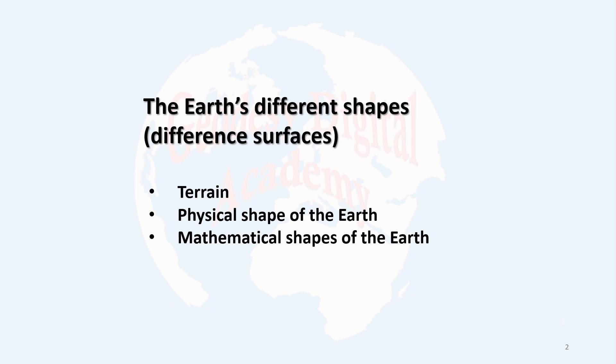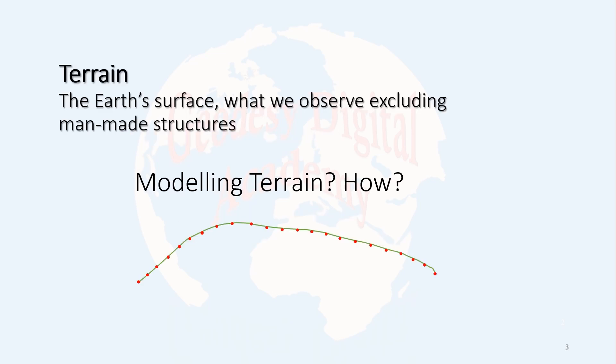The first thing we have to discuss is the different shapes of the Earth, or different surfaces in geodesy. Terrain is the surface that we see with our eyes, the place that we live on. This surface is rather complicated. It's not possible to find a mathematical model which can describe this surface all over the Earth, even locally.